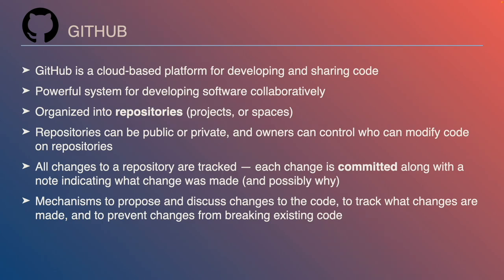GitHub is organized into repositories, which you can think of as projects or spaces. A repository has a title and contains files specific to a particular project. Repositories can be public, in which case anybody can see and download the materials, or they can be private, requiring permission to access. Even with public repositories, viewing and downloading code doesn't mean you can make changes — the owners control who can modify and accept changes.